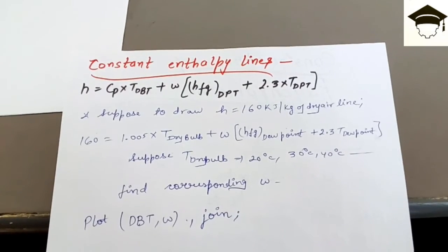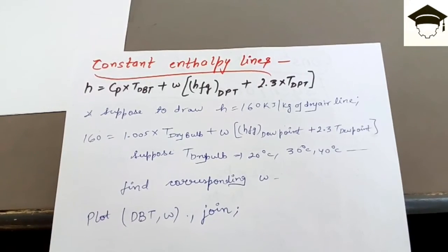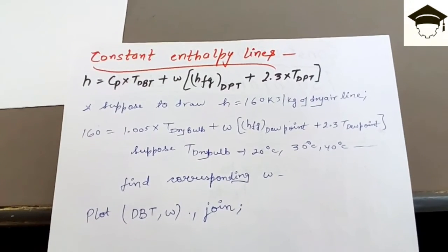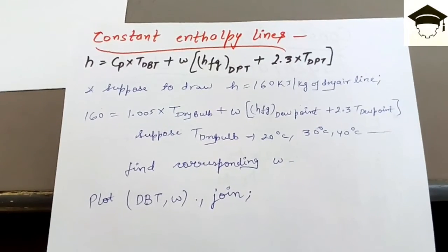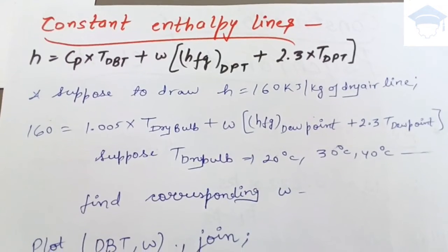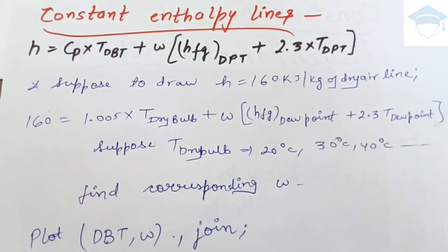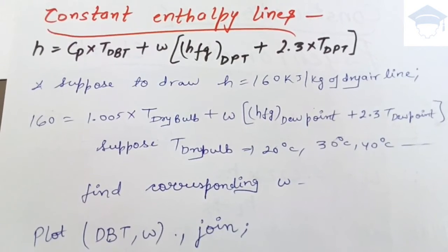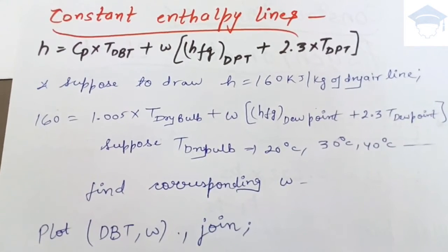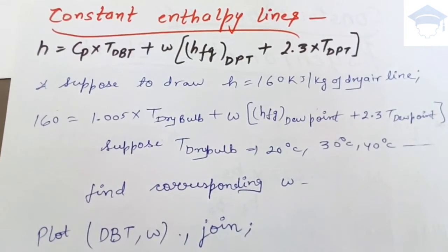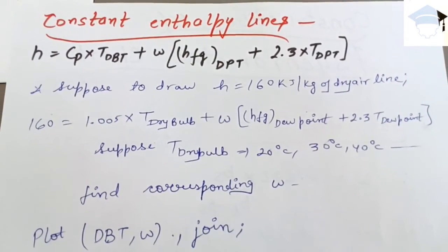For the first point, corresponding to 20°C, you use this equation: 160 equals 1.005 times dry bulb temperature plus omega times HFG at dew point plus 2.3 times dew point temperature. You substitute dry bulb temperature as 20°C. You need to know or assume the dew point temperature, and from a steam table you find the latent heat HFG at that dew point. You substitute everything in the equation, and since only omega is unknown, you solve for omega.